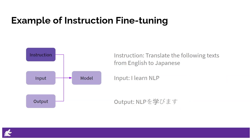For example, if you want to train a machine translation model, supervised fine-tuning data are a pair of source language data and target language data. In instruction fine-tuning, we may introduce an instruction such as "translate the following texts from English to Japanese." Experiments showed that giving this instruction to the LLM boosts up model performance.